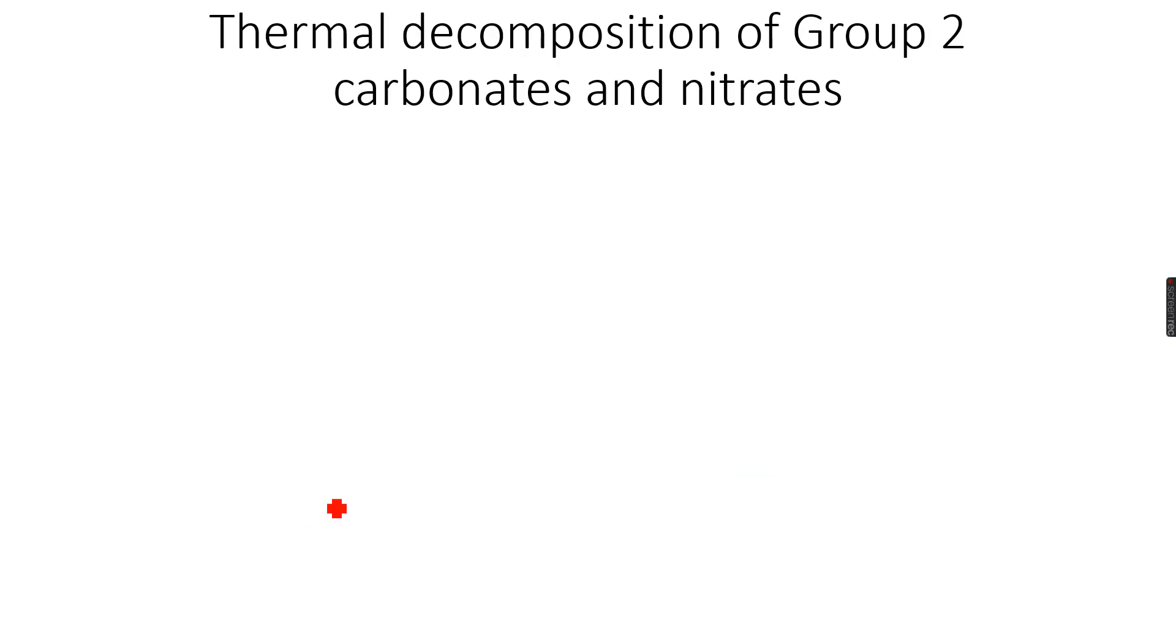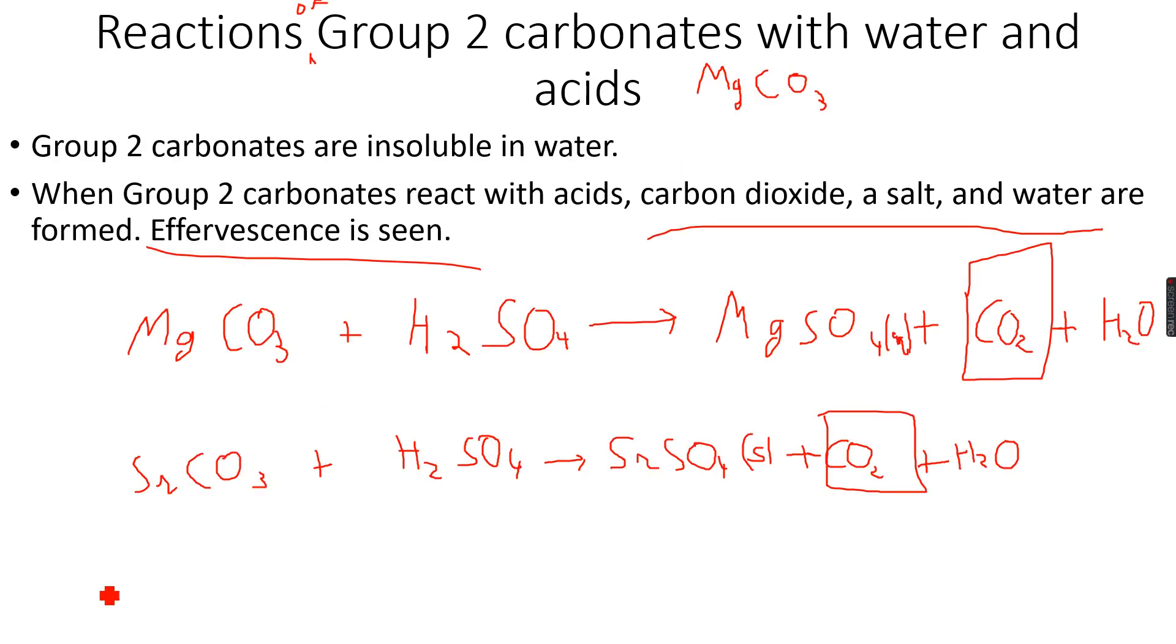Thermal decomposition of Group 2 carbonates and nitrates. So actually talking about nitrates, let me just tell you a quick concept. MgCO3 plus HNO3, which is nitric acid, gives Mg(NO3)2, which is magnesium nitrate, plus H2O plus CO2 again. This remains the same.